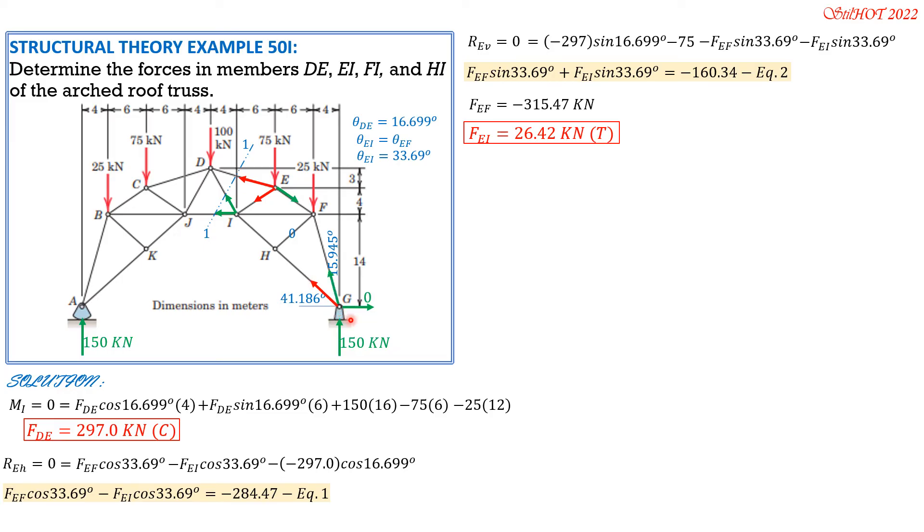At Joint G, these are the unknown forces. Method of joints. I make GH red because it is equal to HI also. Horizontal component of resultant at G zero. Considering leftward positive because all these forces are leftward: FGH cosine of 41.186 degrees, then plus FG, FFG sine of 15.945 degrees. We express FFG in terms of FGH, so it is negative cosine 41.186 over sine 15.945 degrees. So FFG is negative 2.7395 FGH.